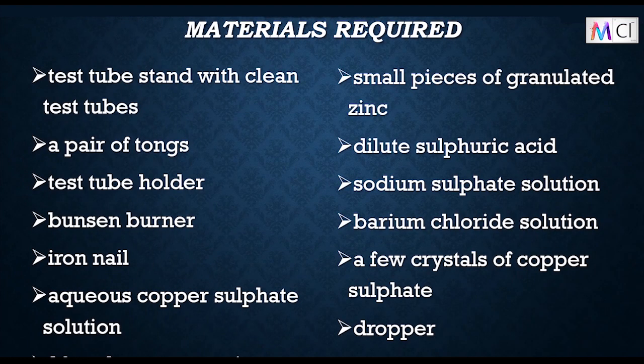Materials required: test tube stand with clean test tubes, a pair of tongs, test tube holder, Bunsen burner, iron nail, aqueous copper sulphate solution, small pieces of granulated zinc, dilute sulphuric acid, sodium sulphate solution, barium chloride solution, a few crystals of copper sulphate, and a dropper.